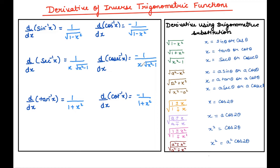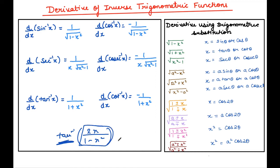Often the function is not directly visible as sin⁻¹ or cos⁻¹. It appears in a different form. In such cases we can simplify using substitution — just as we did when studying inverse trigonometric functions. For example, if you see the form tan⁻¹(2x/(1−x²)), you recognize the tan 2θ formula. So you substitute x = tan θ. We will use the same logic here when differentiating.